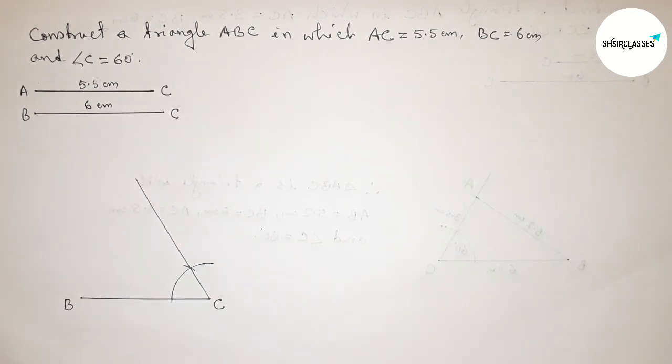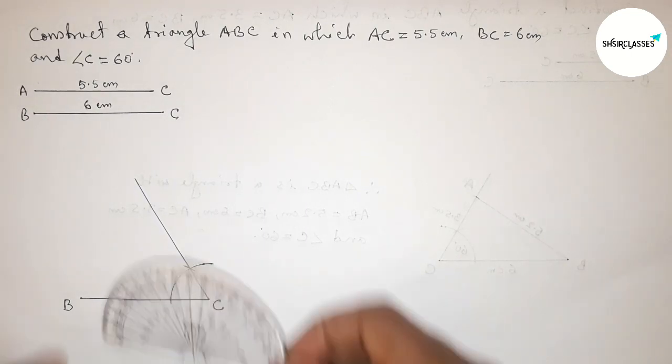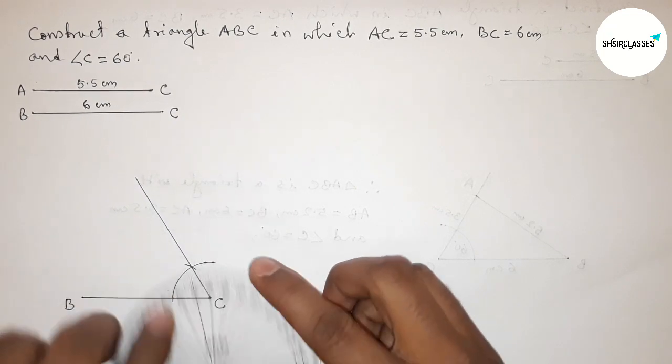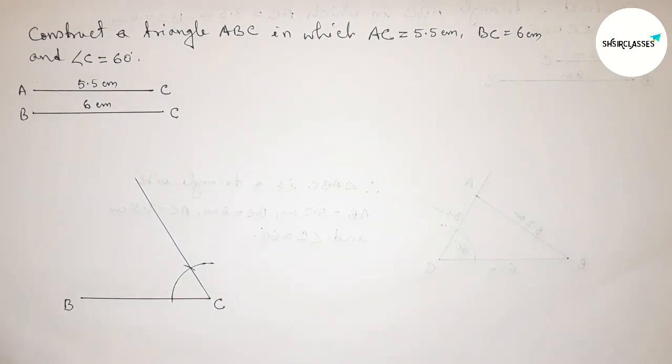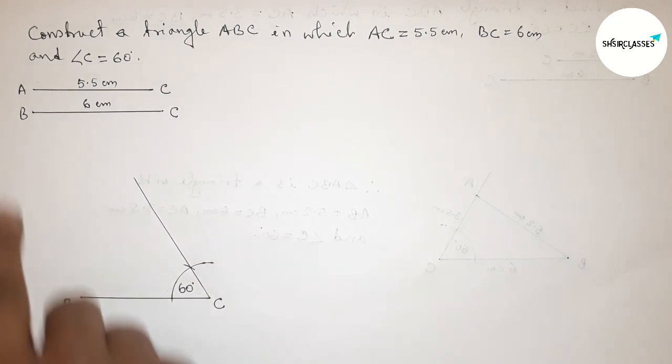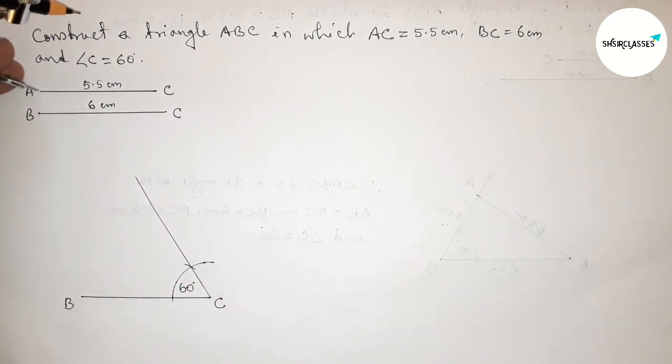Now checking this with the help of protractor. So this is perfectly a 60 degree angle, so angle C equals 60 degrees. Now taking the length AC equals 5.5 centimeter with the help of compass.